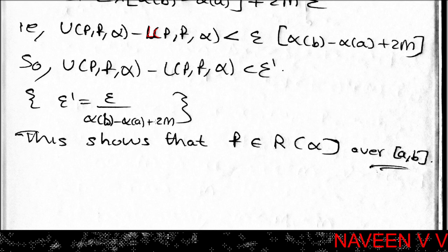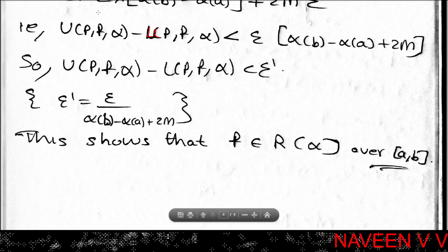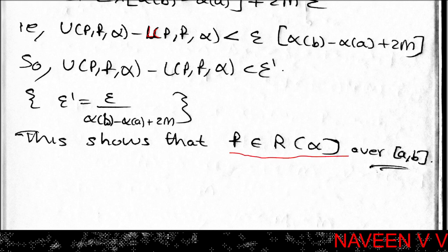Therefore U(P, f, alpha) minus L(P, f, alpha) is less than epsilon times (alpha(b) minus alpha(a)) plus 2M times epsilon, which equals epsilon times (alpha(b) minus alpha(a) plus 2M). By choosing epsilon appropriately, upf-alpha minus lpf-alpha is less than epsilon. Since this holds for every epsilon greater than 0, by the converse part of Theorem 6.6, f is Riemann-Stieltjes integrable with respect to alpha over [a, b].